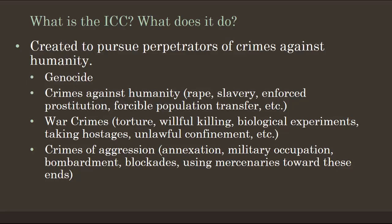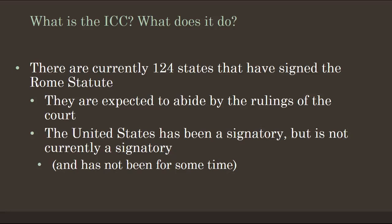There are currently 124 states — countries — that have signed the Rome Statute, and those 124 states are expected to abide by the rulings of the court. It is important to note that the United States has been a signatory of the Rome Statute in the past, but it is not currently — and this has been the case for at least a decade. Not being in the ICC doesn't help the United States' reputation, as membership signals what your country will and won't stand for.